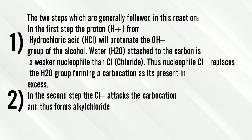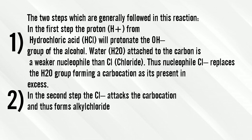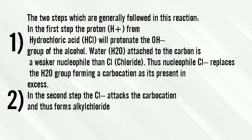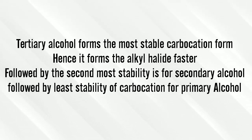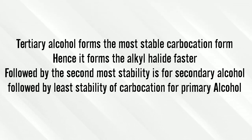In the first step of the mechanism, the intermediate carbocation is formed. In the second step, the chloride ion reacts with the carbocation, forming the alkyl chloride. The tertiary alcohol has the most stable carbocation form, hence it forms the alkyl halide fastest, followed by secondary and then primary alcohol.